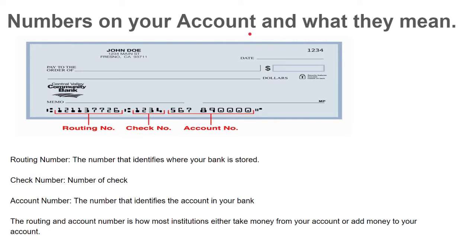Now let's move on to checks and numbers on your accounts. A check has a routing number and an account number. The routing number identifies which bank your money is stored in. Your account number is the number of your specific account at that institution — different accounts have different account numbers. Your checking account will have a different number than your savings account or money market account.